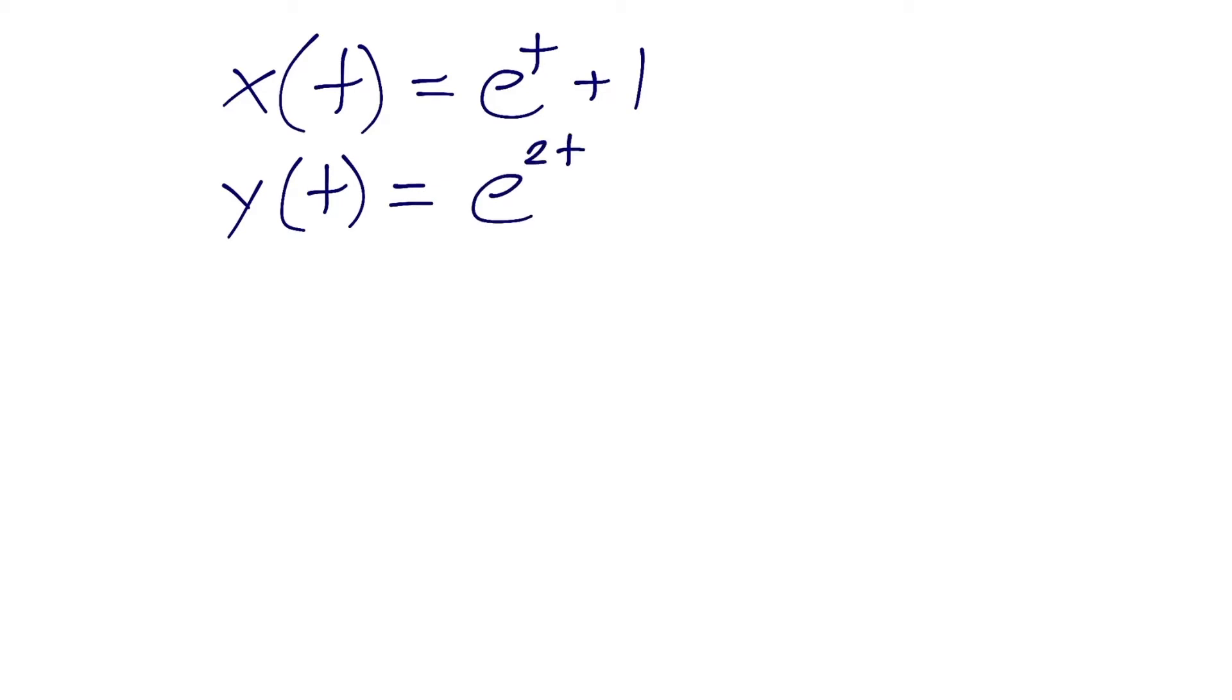So these are parametric equations, and what that means is that we have two variables, x and y, where their values are expressed in terms of another variable. And in this case, that other variable is the variable t. We have to input a variable t, and that'll give us values of x and y out.